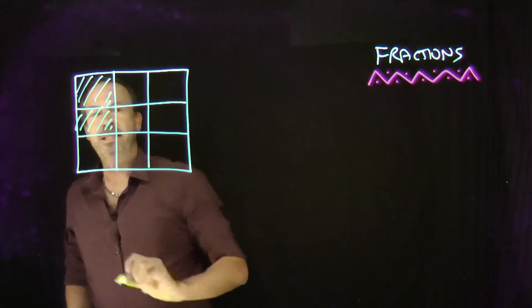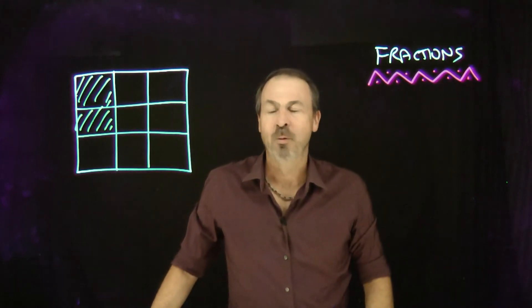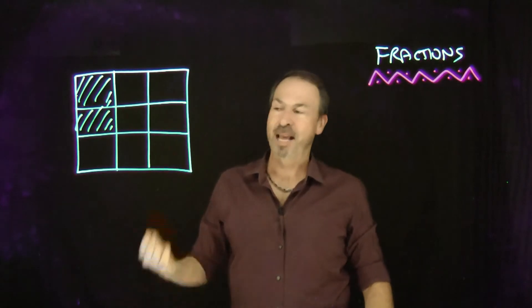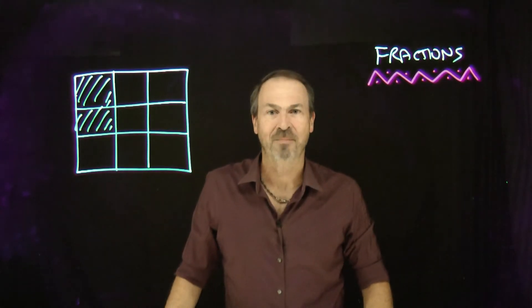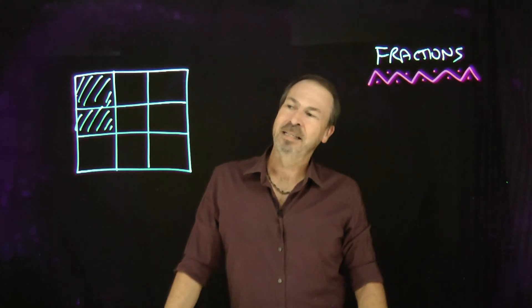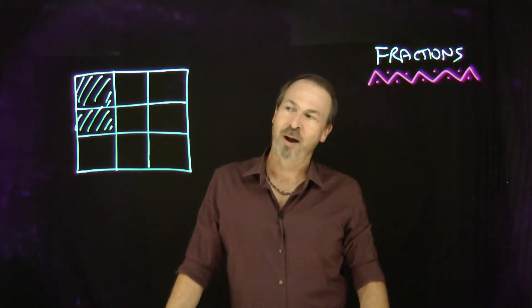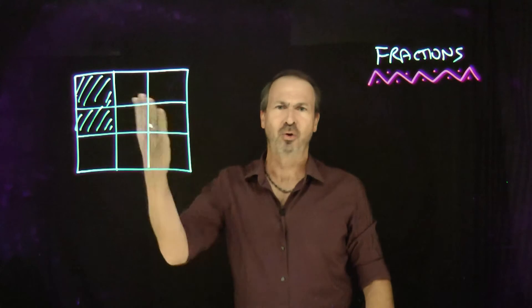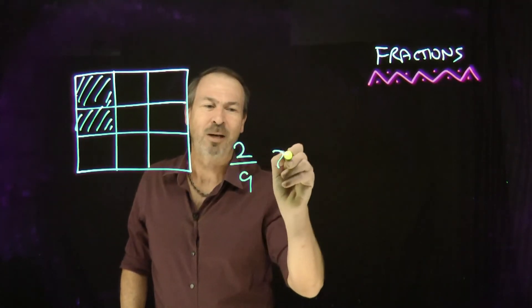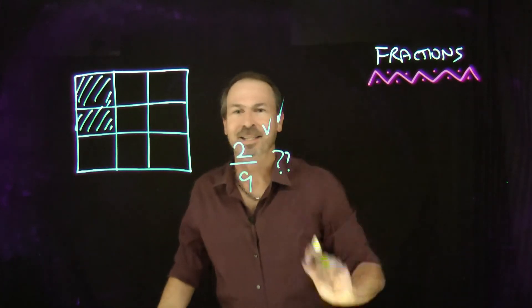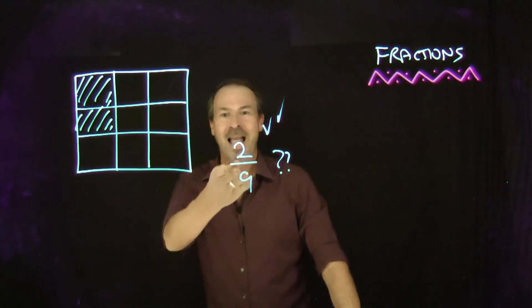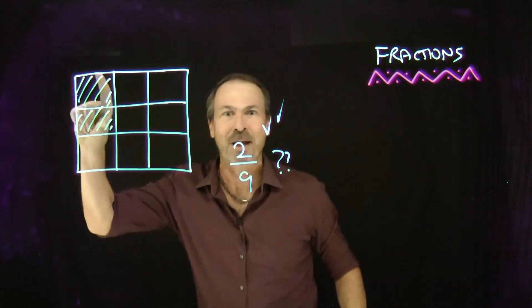Some number of square pies were shared equally amongst some number of students, so each student ends up with this amount of pie — that's the answer. What was the question? How many pies? How many students? From our early grades we say that's two parts out of nine — that's two-ninths. But from the pie sharing, can you see this really is two pies being shared equally amongst nine students? Try drawing two square pies and nine students and make sure that really is the amount per student.